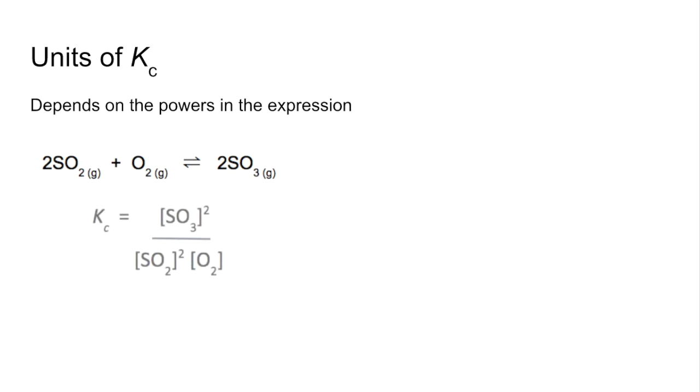So we'll move on to units of Kc. Now these can vary, and it all depends on the powers in the expression. So we'll look at a couple of examples. Here's the first one. So the Kc expression would look like that. So the units would effectively be moles per decimetre cubed squared on the top, divided by moles per decimetre cubed, cubed on the bottom. That would cancel to 1 over moles per decimetre cubed, and then we bring everything to the top, and it becomes decimetres cubed per mole.